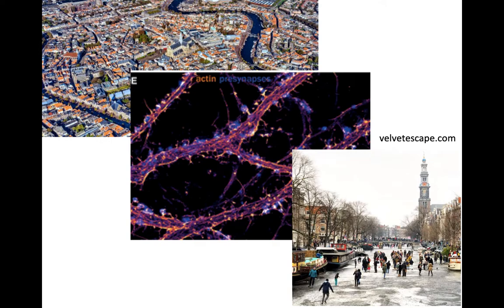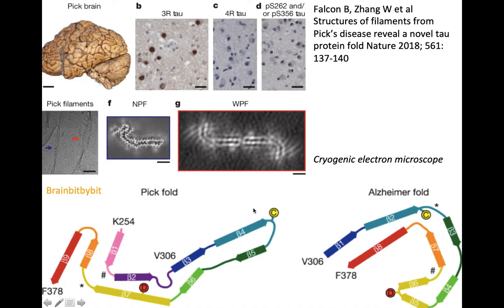A very interesting technique called cryogenic electron microscopy allows you to freeze proteins and then examine their 3D structure. In a Nature 2018 article, researchers took patients with Pick's disease — showing marked frontal lobe atrophy — isolated the Pick bodies from the cells, which consisted of Pick filaments, and then examined those filaments with cryo-EM. They noticed that the folding of the abnormal tau was different in Pick's disease than in Alzheimer's disease.